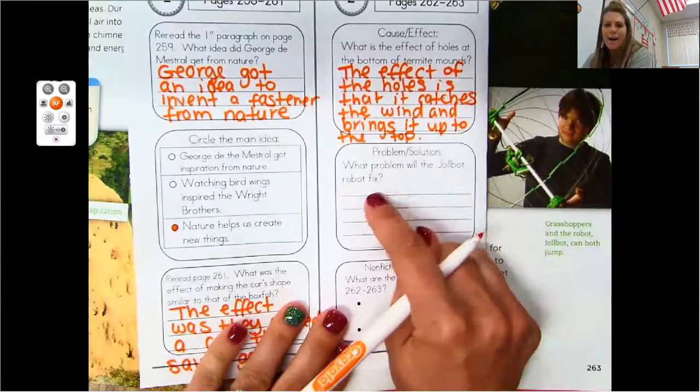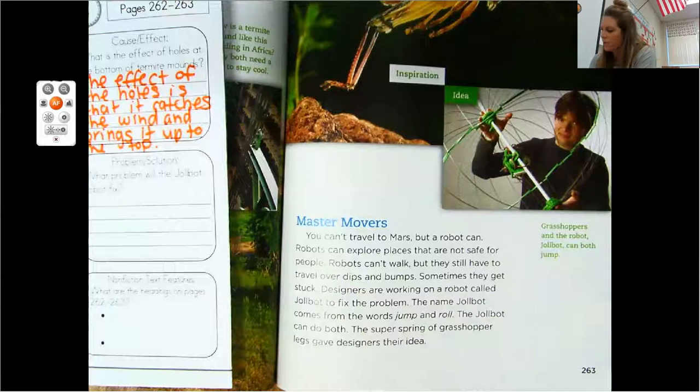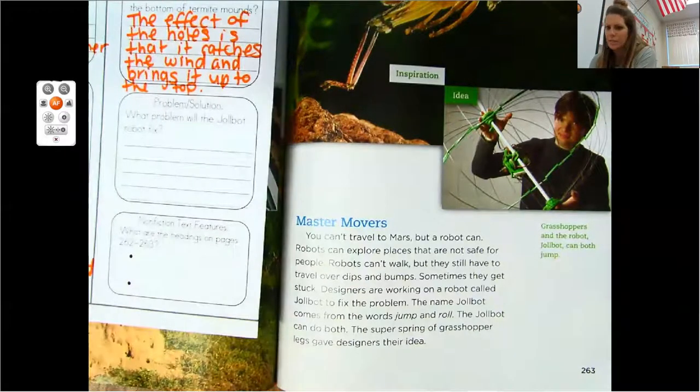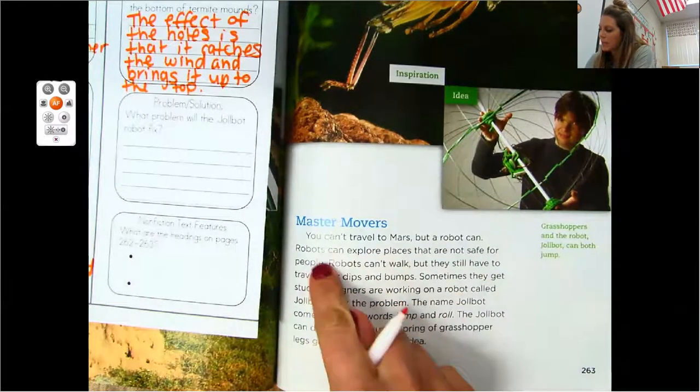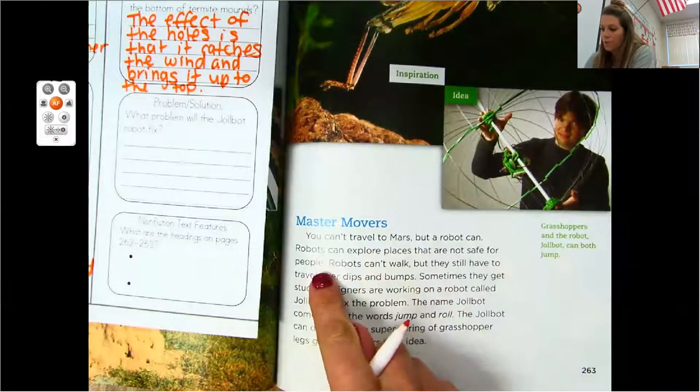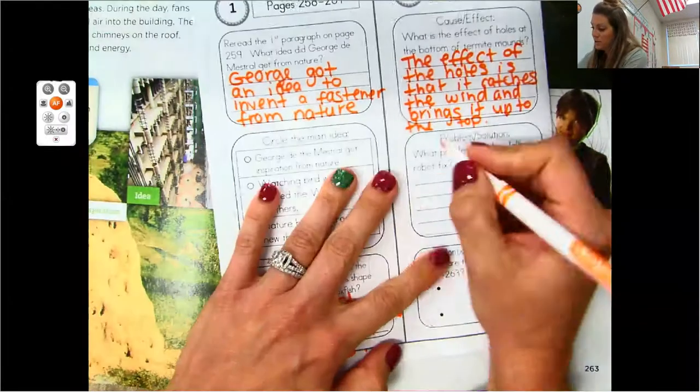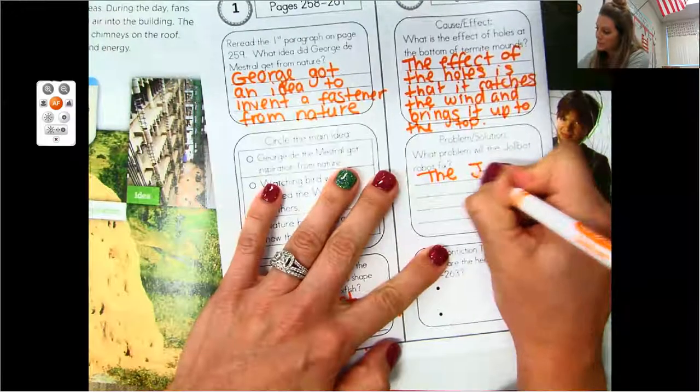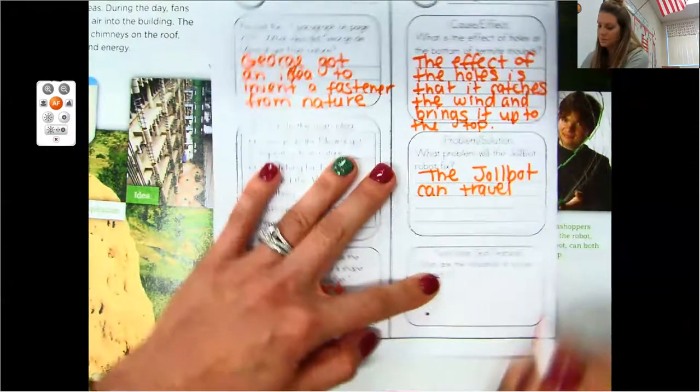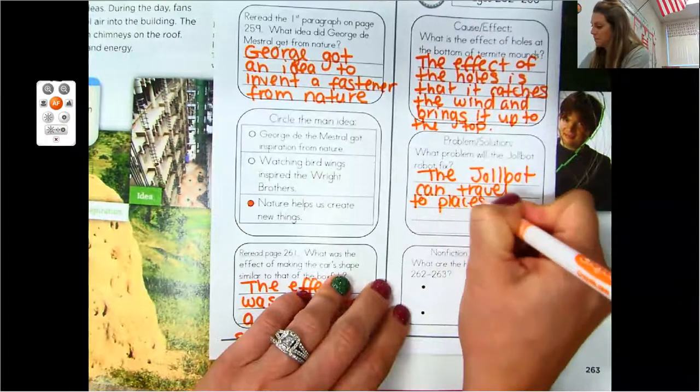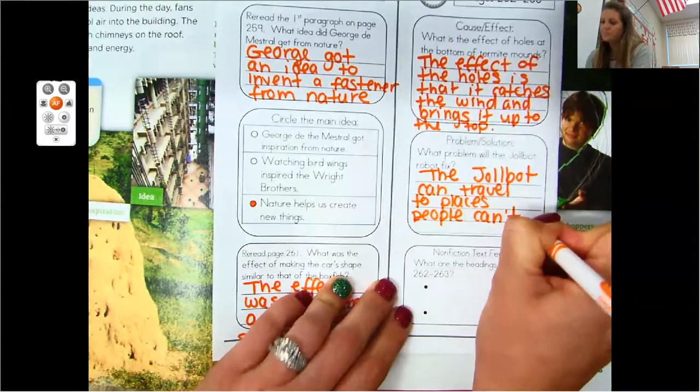All right. What problem will the Joelbot fix? Take a minute and see if you can figure that one out. Reread that first sentence with me. You can't travel to Mars, but a robot can. Robots can explore places that are not safe for people. So what problem can the Joelbot fix? The Joelbot can what? Yeah, travel to places people can't.